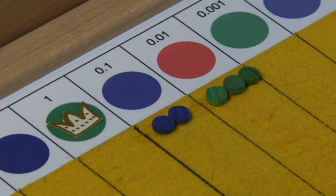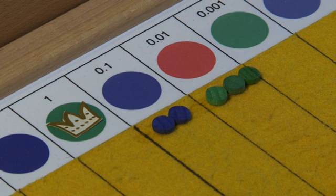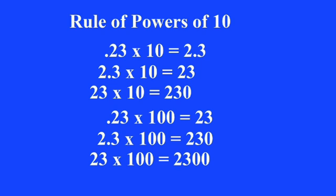I would work with the student to get them to state the rule or the effects of multiplication by the powers of ten: when multiplying by a factor of ten, you move the decimal place as many places to the right as we have zeros in the multiplier.